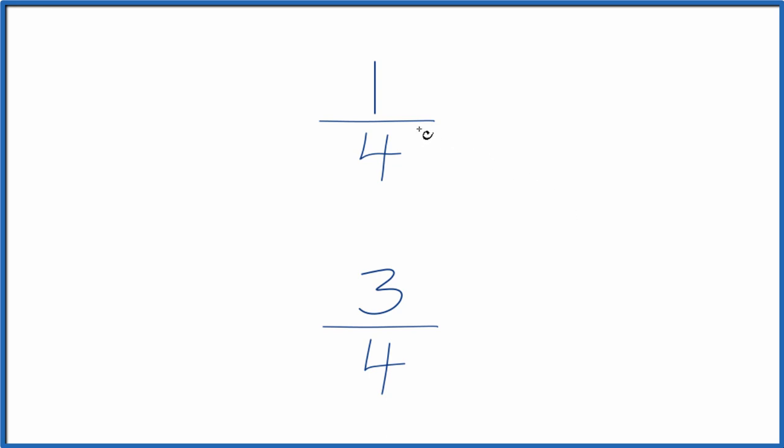So first off, if we have the denominator here the same, when we have that, then we just compare the numerators to figure out which fraction is greater. So since three is greater than one, three-fourths is going to be greater than one-fourth.